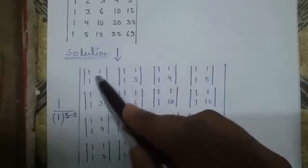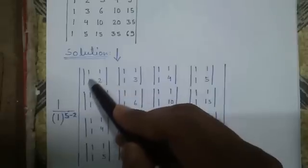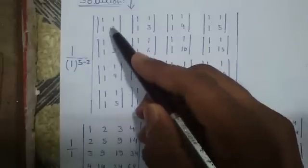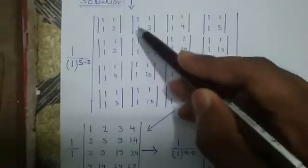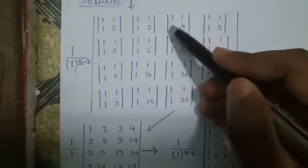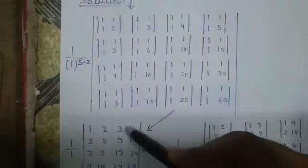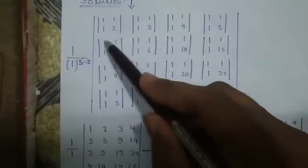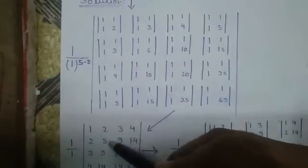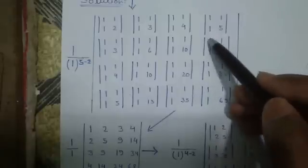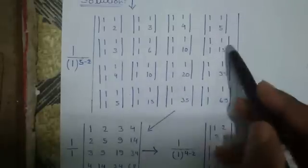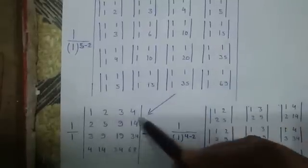Next, you have to find out minors of each block. Minors means this number into this number minus this number to this number. So, 2 into 1, 2 minus 1 into 1, 1. So, 2 minus 1 is 1. We will write here. Similarly, 1 into 3 is 3 minus 1 into 1, 1 that is 2. 1 into 4, 4 minus 1 into 1, 1. So, 4 minus 1 is 3. Similarly, 5 minus 1 is 4. For the second row, 3 minus 1 is 2, 6 minus 1 is 5, 10 minus 1 is 9 and 15 minus 1 is 14. Continue with the same process for each row and you will get this.